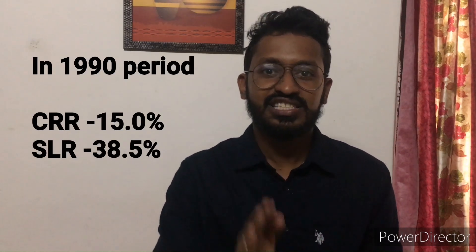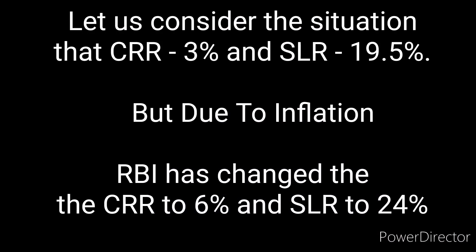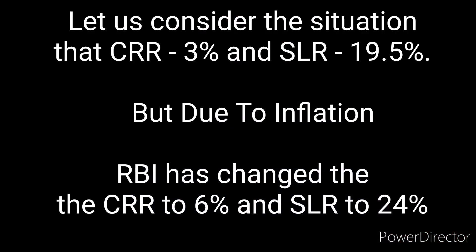Now, how do CRR and SLR help control inflation? For example, CRR is 3% and SLR is 19.5%. If there is a lot of inflation in the economy, the government can increase the CRR from 3% to 6% and the SLR can also be adjusted. This affects how much money is available in the economy.